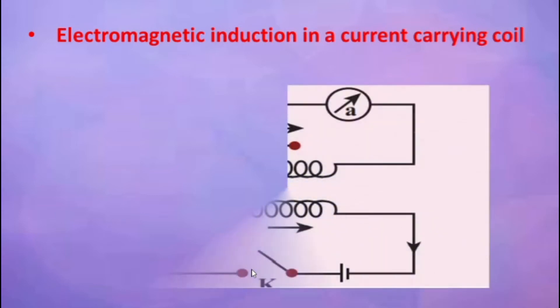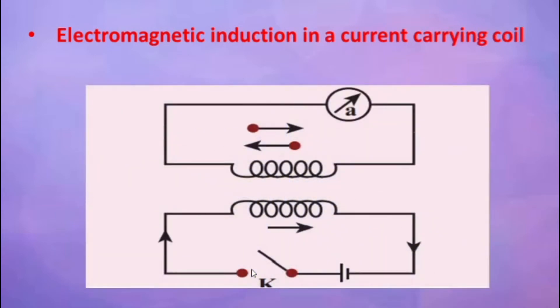Faraday explained the possibility of producing an EMF across the conductor when the magnetic flux linked with the conductor is changed. He demonstrated this with a few experiments. The first one is electromagnetic induction in a current-carrying coil. When the switch is put on or off, at that instant, there is a deflection in the galvanometer.